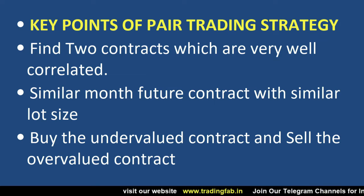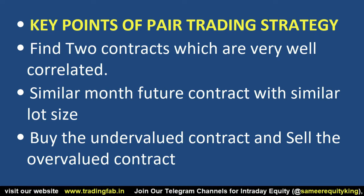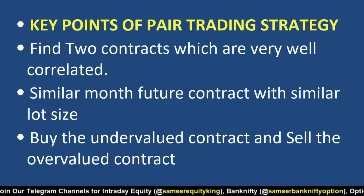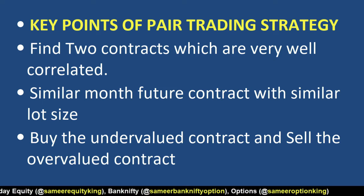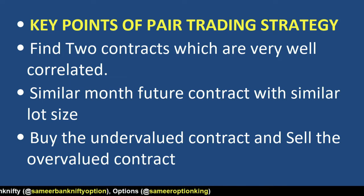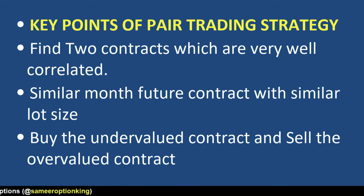उन दो companies का future contract select करेंगे तो उनका month same होना चाहिए और lot size भी similar होना चाहिए, क्योंकि जब यह neutral behavior करते हैं तभी हम इस strategy में profit में आते हैं। Third है: buy the undervalued contract and sell the overvalued contract — जो company undervalued है उसे buy करना है और जो overvalued है उसे sell करना है। इसमें आपको कोई indicator use नहीं करना होता, ज़्यादा technical analysis का knowledge भी ज़रूरी नहीं — बस यह basic fundamental points याद रखने हैं।